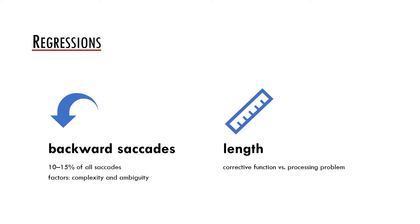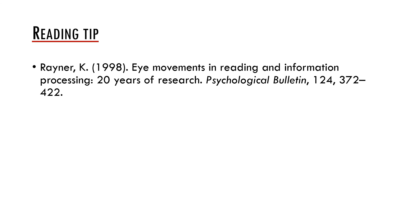Saccades may be either forward or backward. In the research of reading, backward saccades, which are called regressions, are very important. On average, each 10th saccade is a regression, but the frequency may be highly influenced by text complexity and ambiguity. Certain regressions may have only a corrective function, especially when the previous forward saccade was too long. These corrective regressions tend to be short. However, longer regressions serve as evidence of certain processing problems. We will return to this topic in the next presentation.